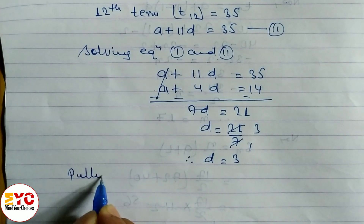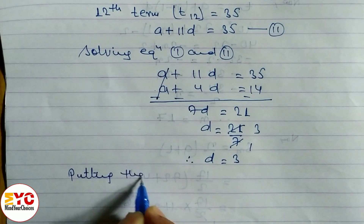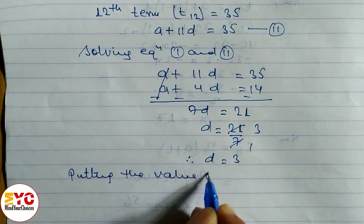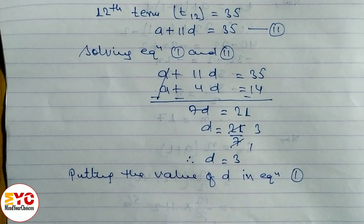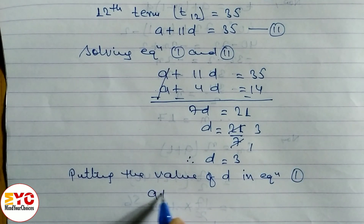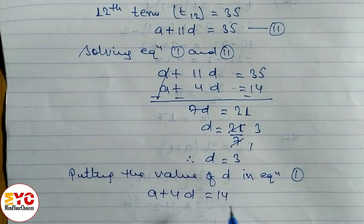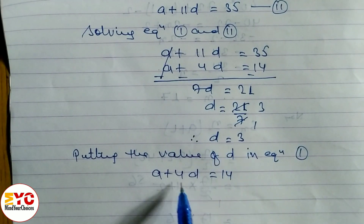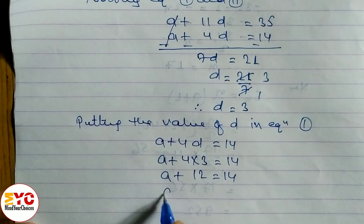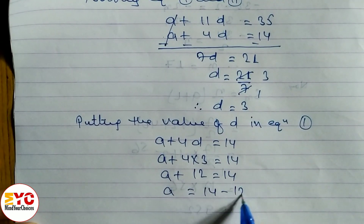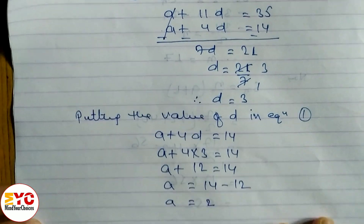Putting the value of D in equation 1: A plus 4D equals 14. In the place of D, we write 3, so A plus 4 into 3 equals 14, giving A plus 12 equals 14. Therefore A equals 14 minus 12, and the value of A is equal to 2. So we have found the first term and the common difference.